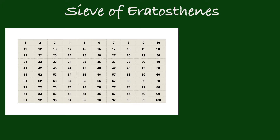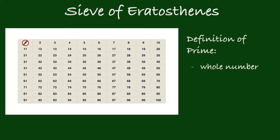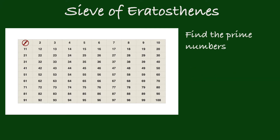First, list all the whole numbers from 1 to 100. It would be good to write them in a table just like this. By definition, 1 is not a prime number since prime numbers should be greater than 1, so cross it out.